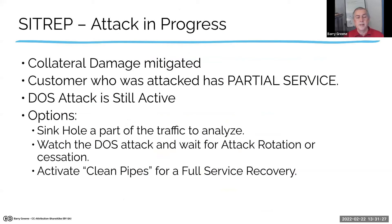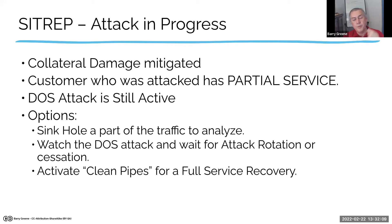With the attack in progress, I've got it pushed out and mitigated — but not remediated, not taken care of. The customer now has partial service. Their IP address works within your backbone and you pushed the attack off to the side. The attack is still active. Then you go through your toolkit for the next move: sinkhole it and watch it, push it upstream, activate a clean pipe solution for full service discovery. This is where the playbook comes in. If you have a persistent attacker, they'll start rotating and shifting — the dance is in partnership between your customer and your operations as you're dancing with the miscreant.